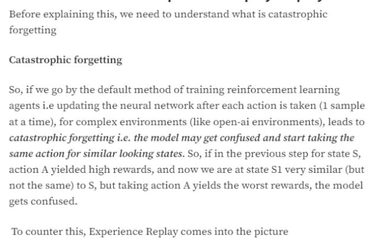Catastrophic forgetting means the model might get confused and start taking similar actions for similar-looking states, which can lead to very bad rewards. For example, assume we are at state s, we take an action and get great rewards. Now if we get a state very similar to s — say s1 — the model might start taking the same action, which might yield very bad rewards on s1.